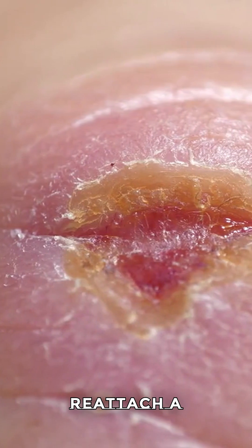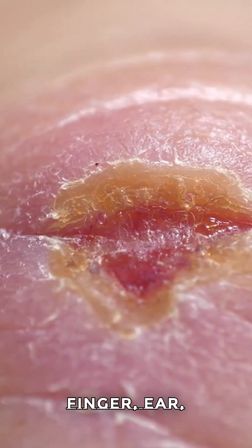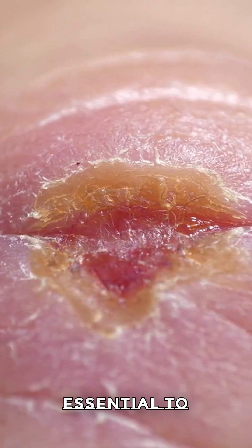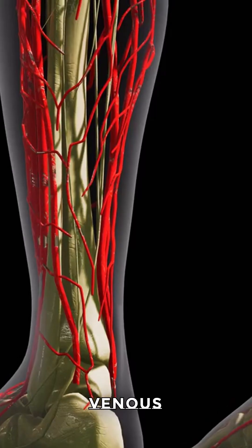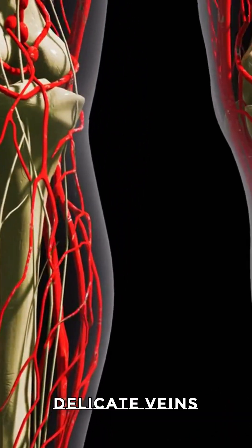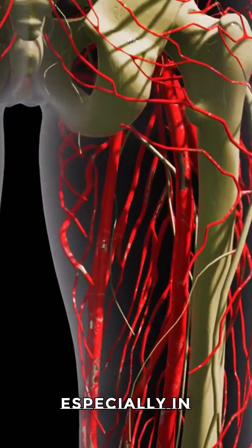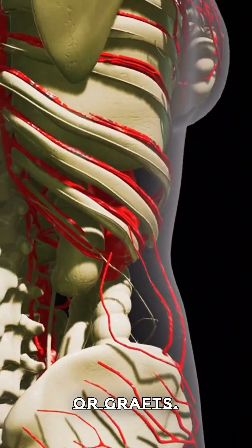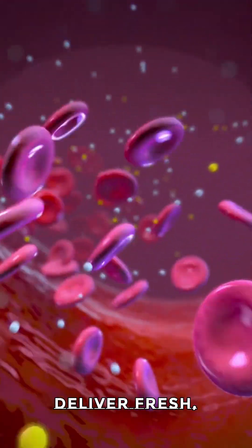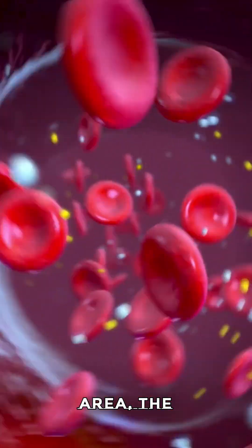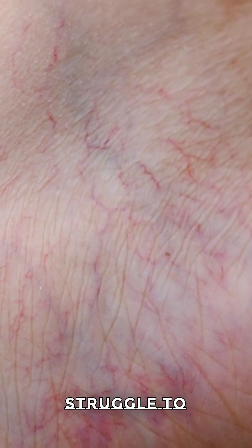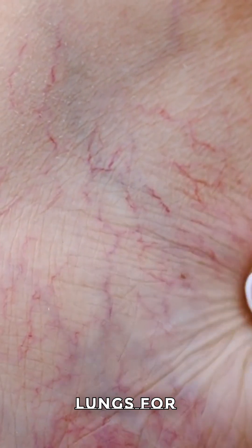When doctors reattach a severed body part like a finger, ear, or piece of skin, restoring blood flow is essential to avoid venous congestion. Venous congestion happens when the small, delicate veins at a surgical site, especially in procedures like reattachments or grafts, aren't able to carry blood away fast enough while arteries continue to deliver fresh, oxygen-rich blood to the area. The weakened or damaged veins struggle to send that blood back to the heart and lungs for reoxygenation.